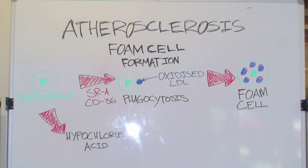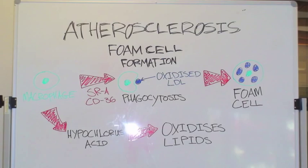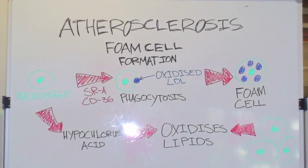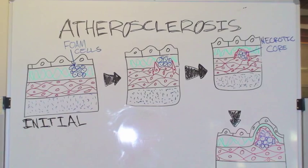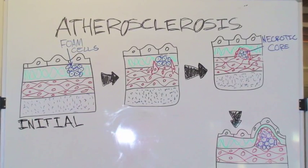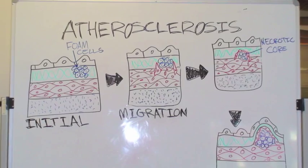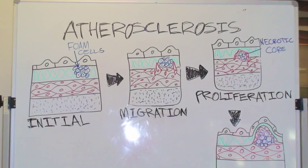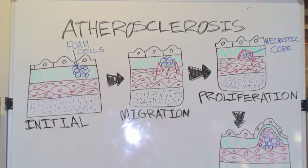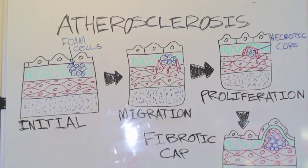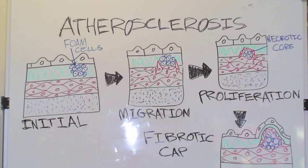Macrophages also produce an enzyme which makes hypochlorous acid, which has the capability to modify and oxidize lipids in the intima, therefore attracting more monocytes to the lesion and furthering plaque development and endothelial cell injury. The endothelial injury caused by foam cells leads to the release of vasoactive substances such as cytokines and growth factors. This causes vascular smooth muscle cells to proliferate and migrate from the media, forming a layer over the damaged site. These vascular smooth muscle cells produce extracellular matrix proteins, further contributing to plaque development and fibrotic cap formation. Under the fibrotic cap, a necrotic core develops, consisting of foam cells, dead cells, lipids, and connective tissue.